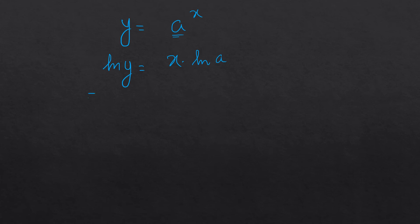Next we will take the derivative both the sides. So we will get 1 over y times dy over dx is equal to ln a. Next step, dy over dx is equal to y times ln a.